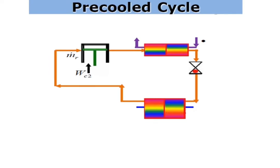Here I have shown the schematic diagram for a pre-cooled cycle. It consists of a compressor, a condenser, an expansion device, and an evaporator. The evaporator is nothing but a heat exchanger known as the pre-cooling heat exchanger. This system operates as per the vapor compression refrigeration principle.